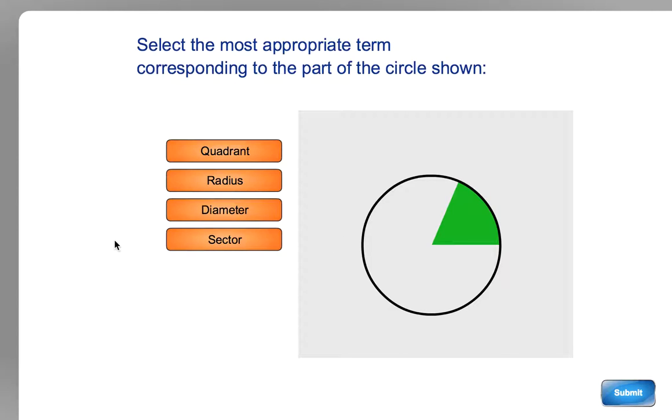In circle terms, it's another very easy one that you should just use the help function for. It's going to ask you to find the most appropriate term for the part of the circle shown.